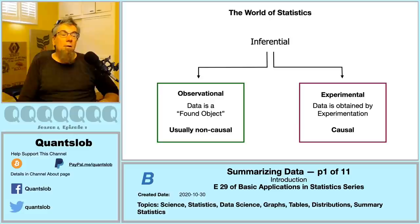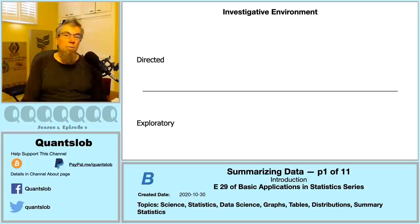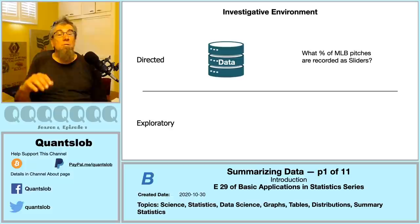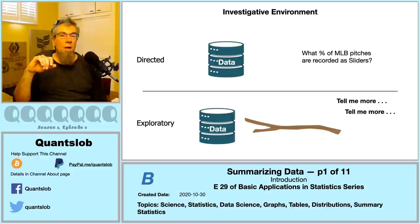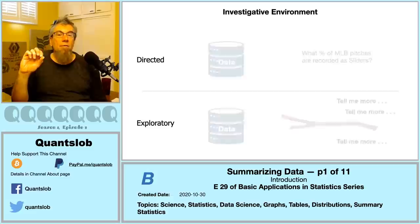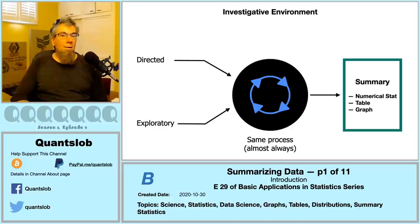In addition to understanding descriptive versus inferential statistics, stats and data science are often carried out in one of two investigative environments: exploratory and directed. Directed means we have a specific question we'd like the data to answer — for example, what percentage of major league pitches are recorded as sliders? Exploratory is a matter of prodding our data and seeing what patterns or insights we can uncover. Whether exploratory or directed usually doesn't affect the process we use to calculate our summaries.